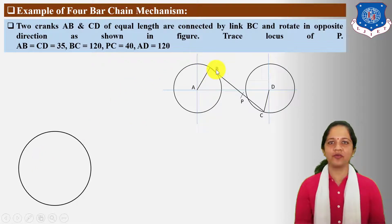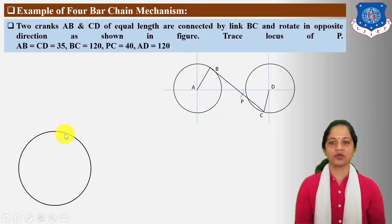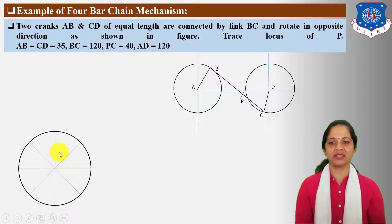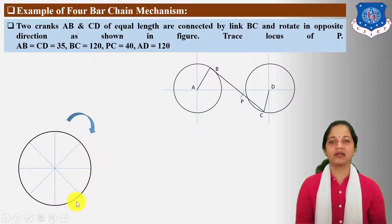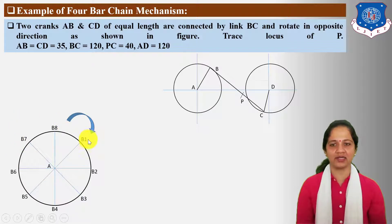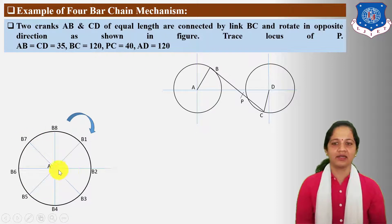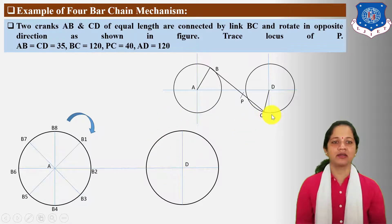The radius of the circle is equal to the length of crank AB, which is 35 mm. AB is the driver crank, so locate uniform positions of the driver crank for one complete revolution. Divide this circle into equal eight parts at 45-degree angles and take the direction of the driver crank as clockwise. Locate the end points of crank AB in clockwise direction as B1, B2, B3, B4, B5, B6, B7, and B8.